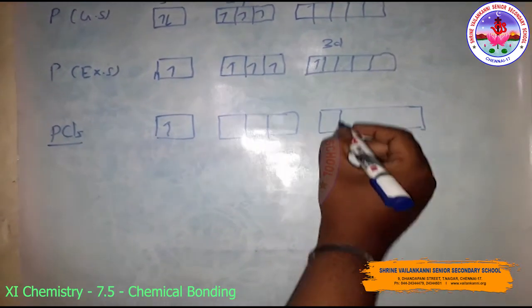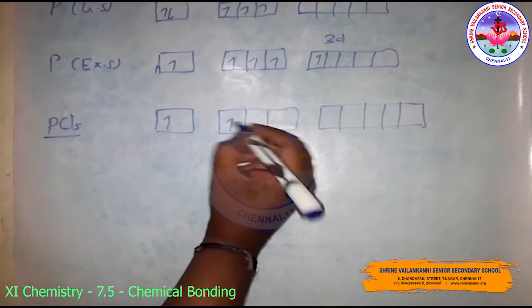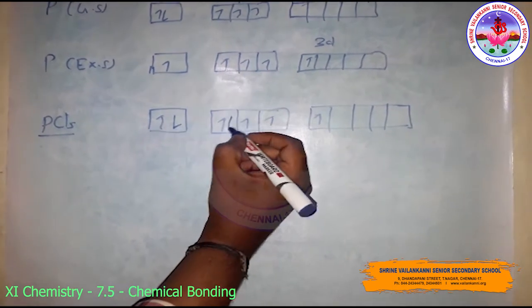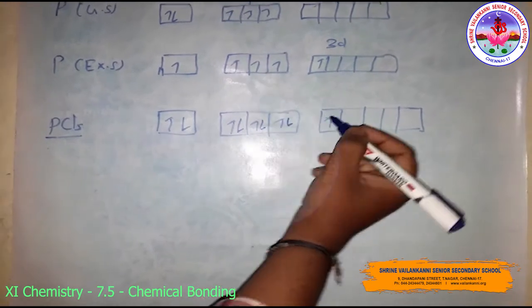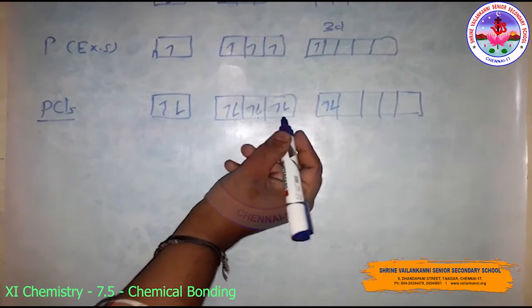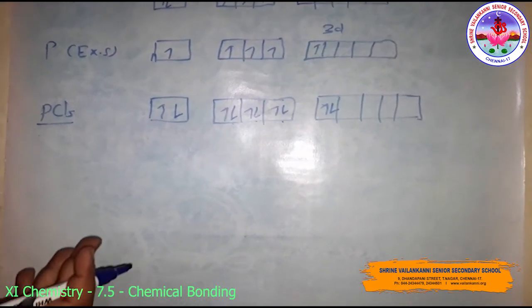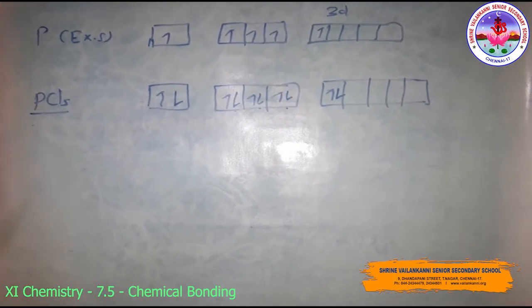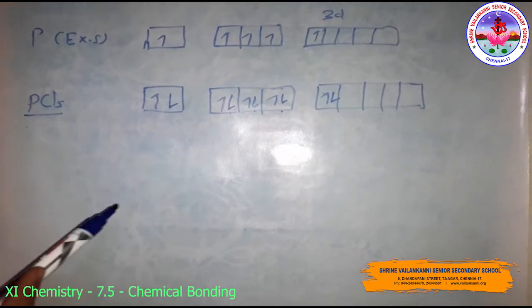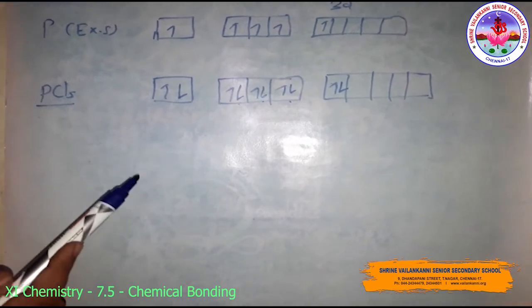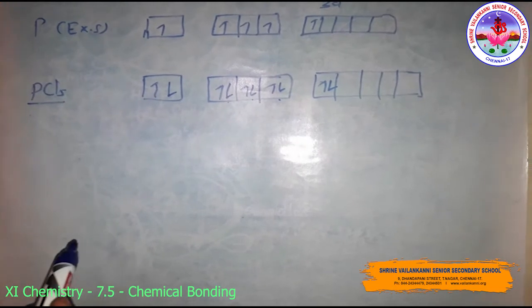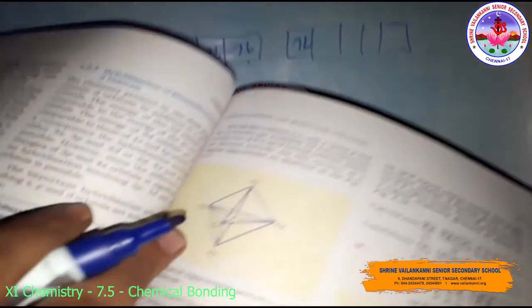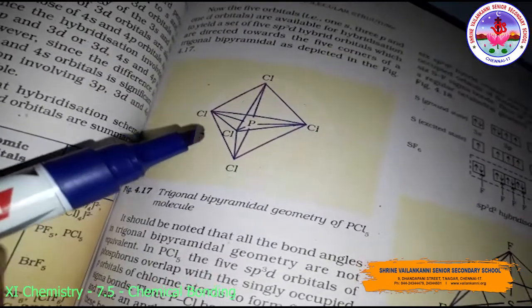The five orbitals — one s, three p, and one d — hybridize to yield five sp3d hybrid orbitals directed towards the five corners of a trigonal bipyramidal geometry. The five chlorine atoms donate electrons to fill these hybrid orbitals, forming five P–Cl sigma bonds. This gives PCl5 its trigonal bipyramidal shape.